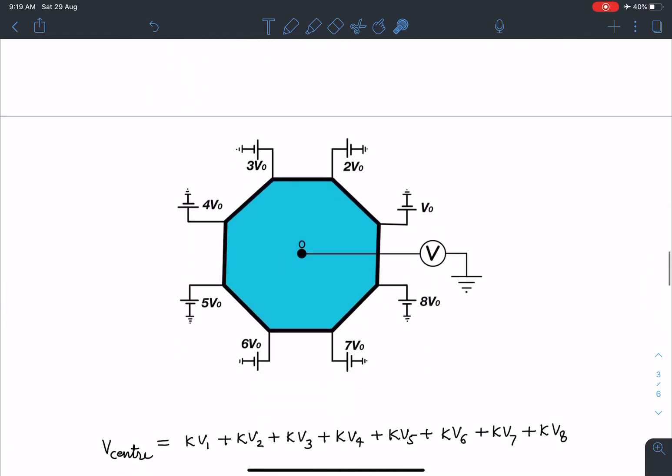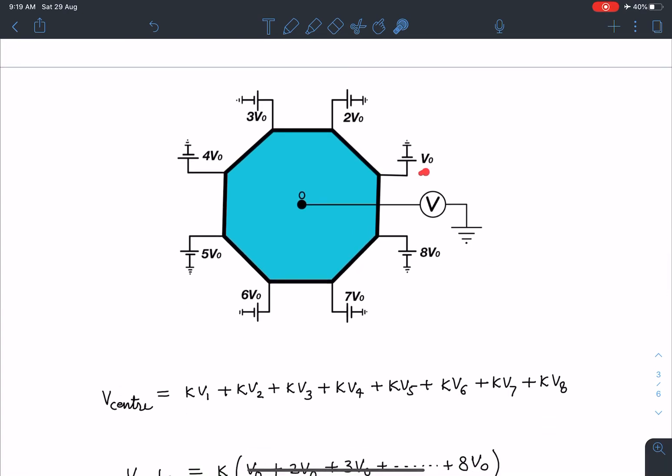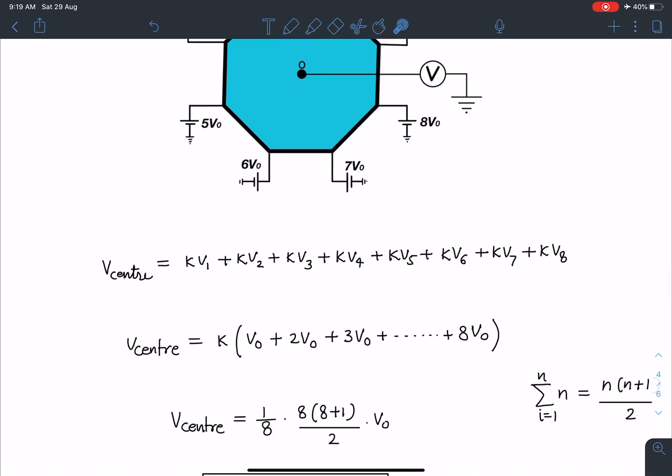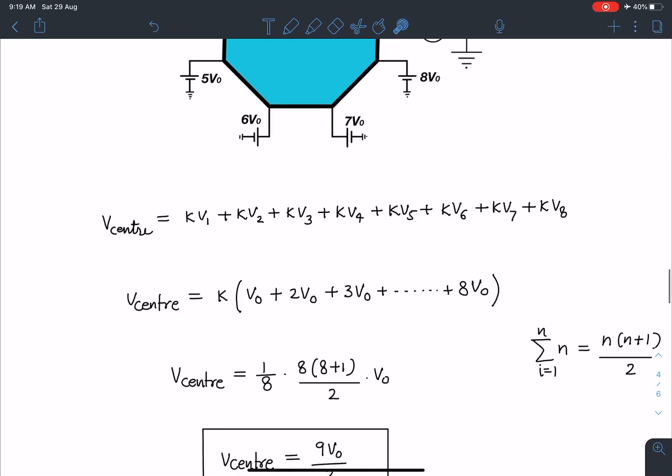Now these vertices are maintained at different potential but due to geometry that number K is going to be same. So now this question becomes very simple. I can write potential at the center will be KV1 plus KV2 up to KV8 similar to previous part. So now I am going to substitute, taking K common: V1 is V0, V2 is 2V0, V3 is 3V0 similarly up to V8 which is 8V0. So here a very simple series will come. First eight terms sum we have to write. It's a simple AP.